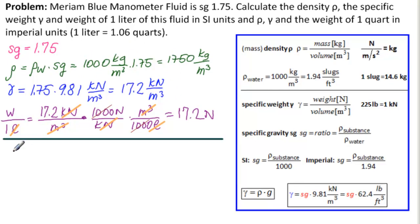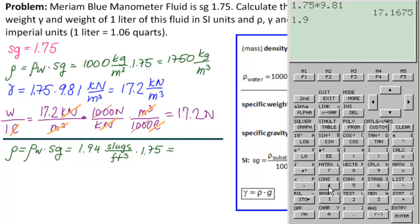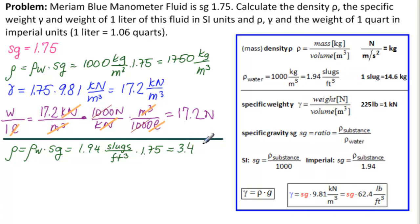Let's do ρ. Same formula. So ρ is ρ_w times SG, except that now we're using 1.94 slugs per feet cubed times 1.75. So that would be 1.94 times 1.75 equals 3.4 slugs per feet cubed.